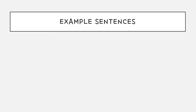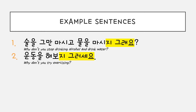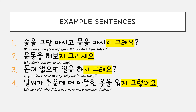Now let's look at some example sentences with English translation. 술을 그만 마시고 물을 마시지 그래요. 운동을 해보지 그러세요. 돈이 없으면 일을 하지 그래요. 날씨가 추운데 더 따뜻한 옷을 입지 그랬어요.